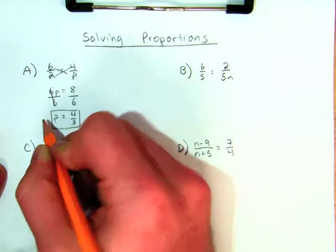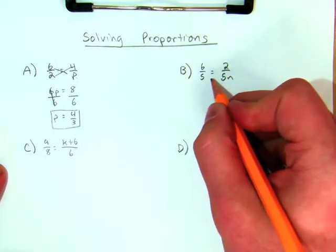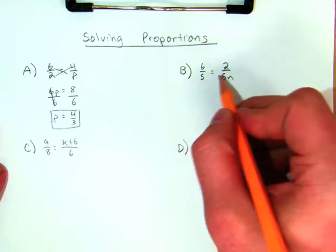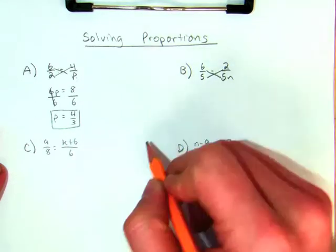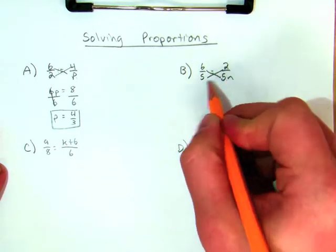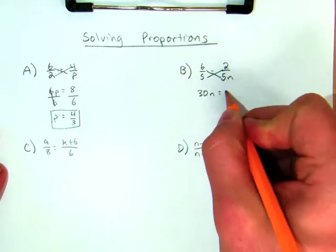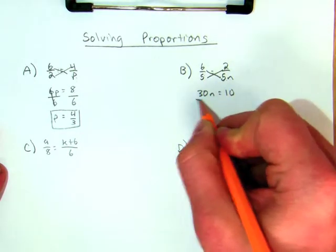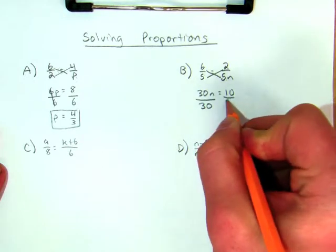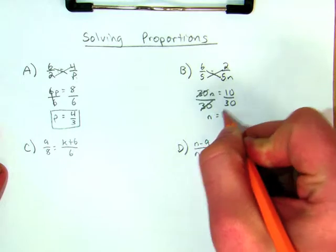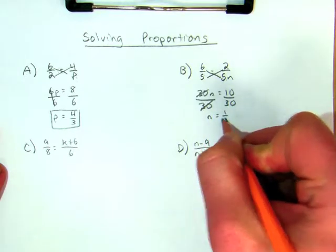Now let's take a look at one that's similar but a little bit different. This time the variable has a coefficient. Does anything change? No. Simply cross multiply. 6 times 5N is 30N equals 5 times 2, which is 10. So I divide by 30 and I'm left with N equals 1 over 3. Very simple.